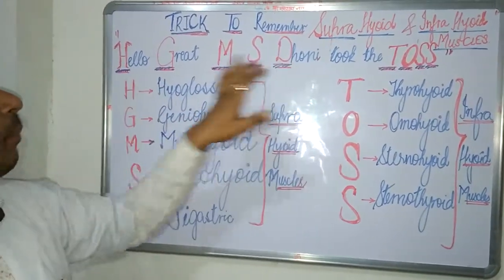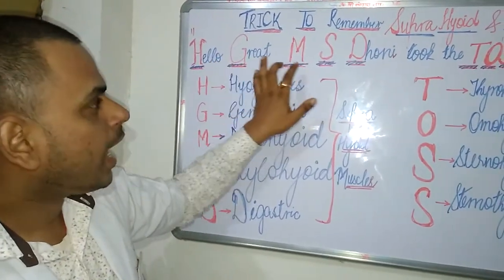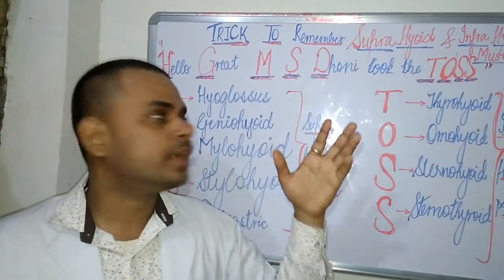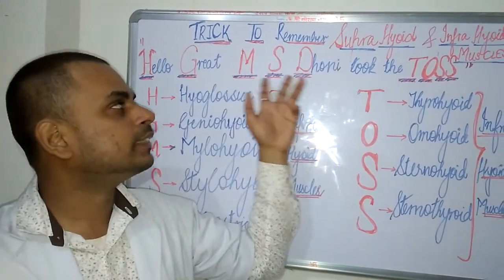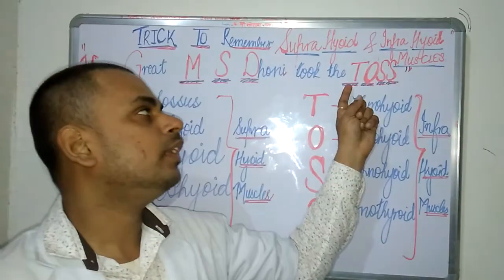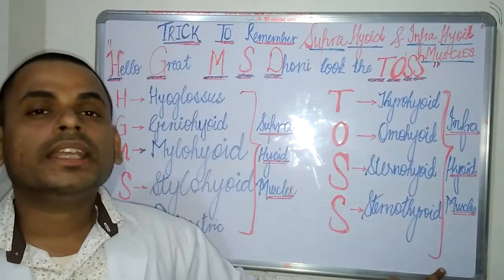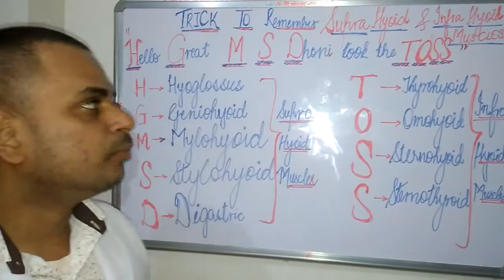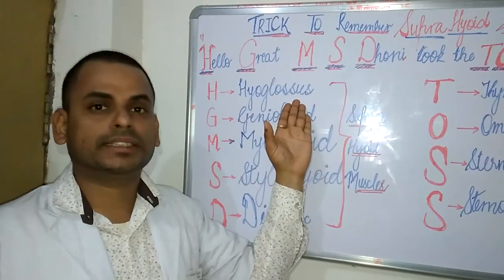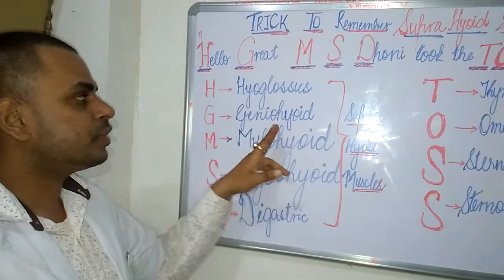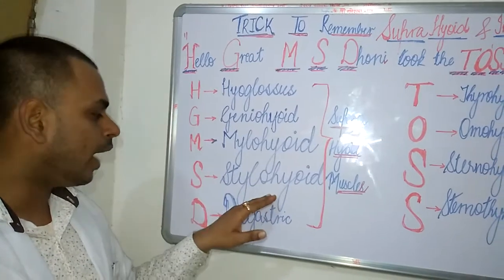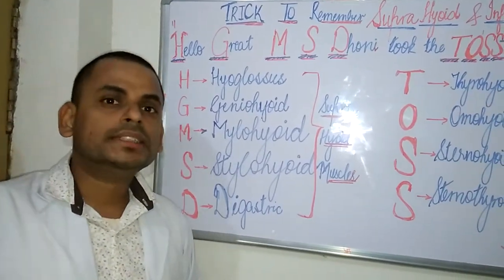To remember easily, look at the initials of the statement: H of 'Hello,' G of 'Great,' M, S, D of 'MS Dhoni' — he's a very famous Indian cricketer. Up to 'MS Dhoni' we have the suprahyoid muscle mnemonic, and 'Took The Toss' — particularly T, O, S, S — will refer to each of the infrahyoid muscles. H refers to the hyoglossus muscle, G to the geniohyoid, M to the mylohyoid, S to the stylohyoid, and D to the digastric.